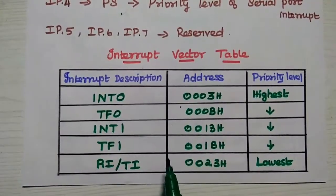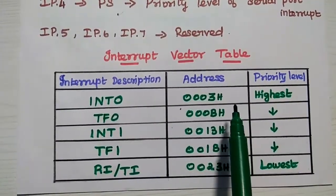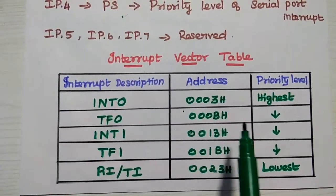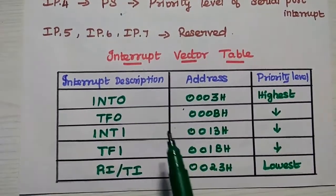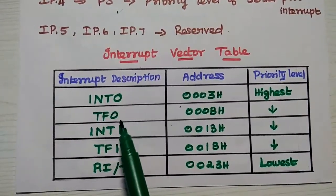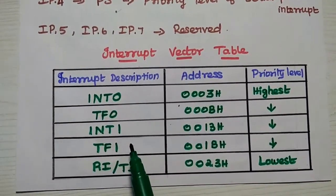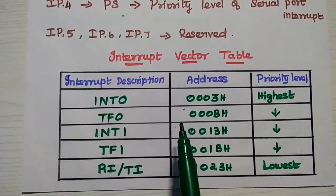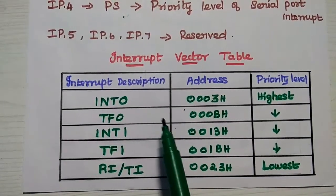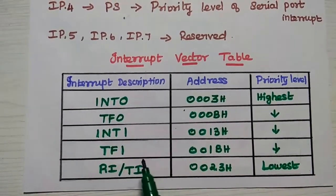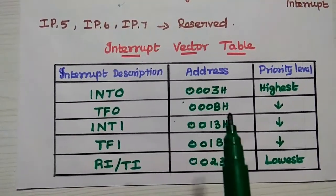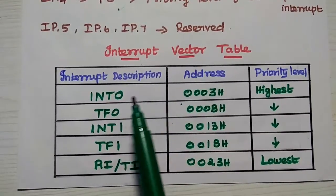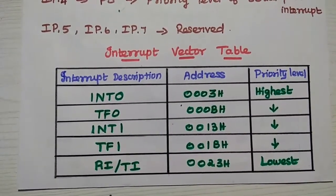Consider two interrupts with different priority levels received simultaneously — the higher priority level will be executed first. For example, if TF0 and INT1 interrupts are received simultaneously, the processor will execute the highest priority, that is TF0, first and then INT1. You have to remember this vector table: the highest priority interrupt is INT0, and the lowest is the serial port interrupt.